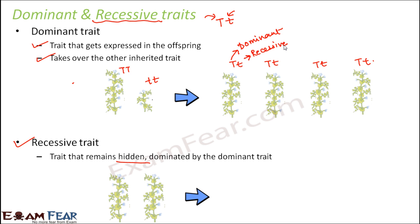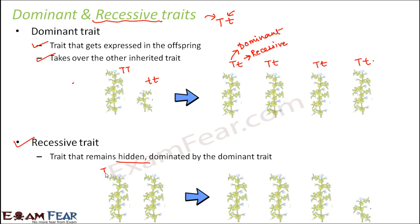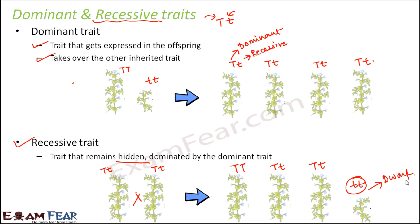In the F2 generation, the parents were capital T small t crossed with capital T small t. When these were crossed, some offspring were homozygous and some were heterozygous. Whichever were heterozygous, the recessive trait got hidden again. But for some, both alleles were for the dwarf trait, and that is why those plants were dwarf. So any recessive trait gets expressed only if it is homozygous — only under a homozygous situation. If present in a heterozygous situation, it will always get dominated by the dominant trait. Please keep this in mind, as it is very important.